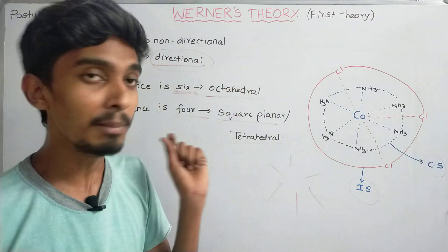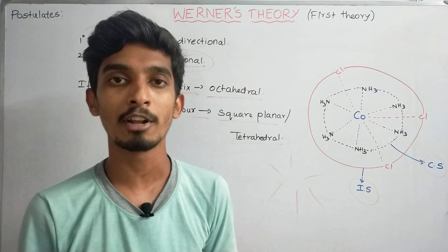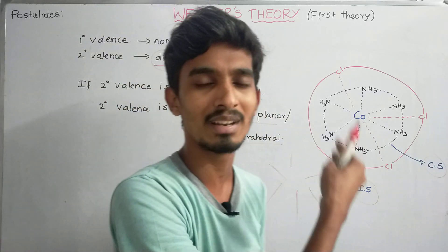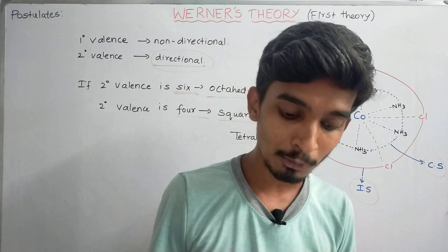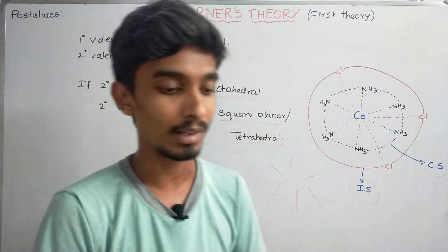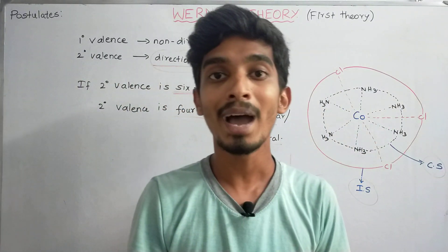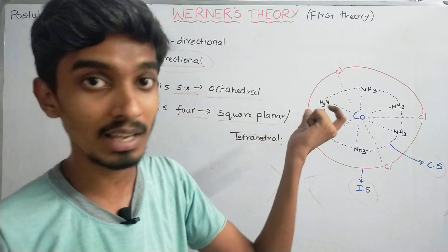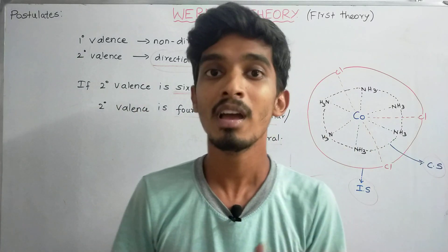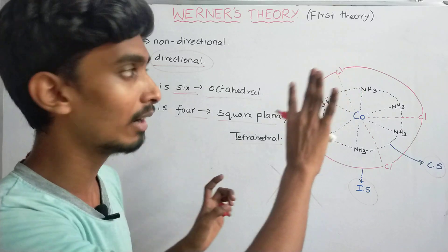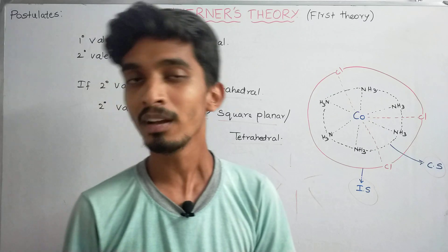There are limitations to Werner's Theory. Even though Werner was able to explain oxidation number and coordination number, the theory cannot explain the color and magnetic properties of coordination compounds. The reason for color and magnetic nature is explained by other theories such as Valence Bond Theory and Crystal Field Theory (CFT), which are at an advanced level. That concludes Werner's Theory — see you in the next video. Thank you.